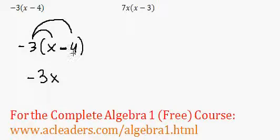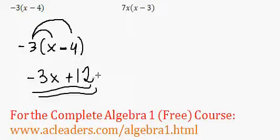Negative 3 times negative 4, positive 12. That's it. That's as simplified as it gets in this case, and we'll leave it.